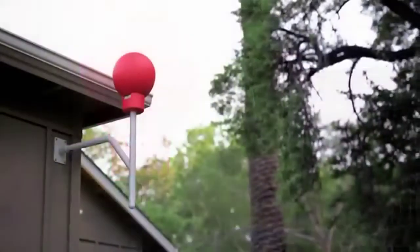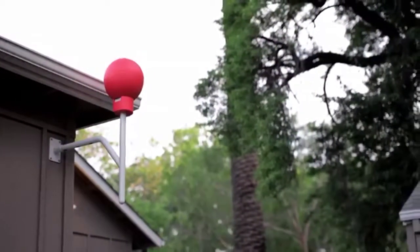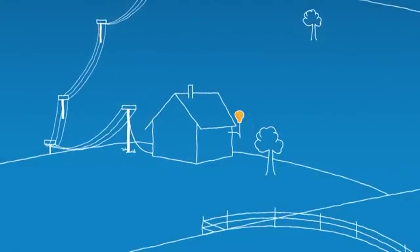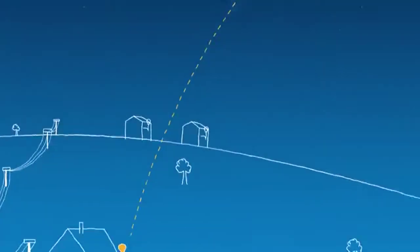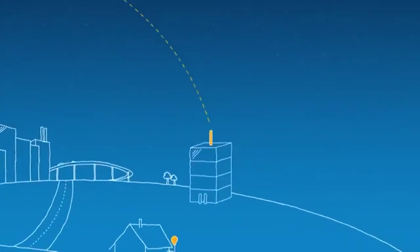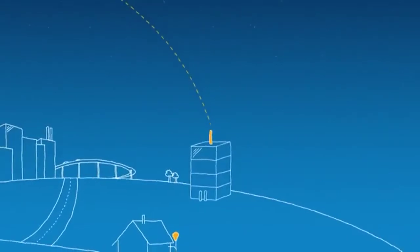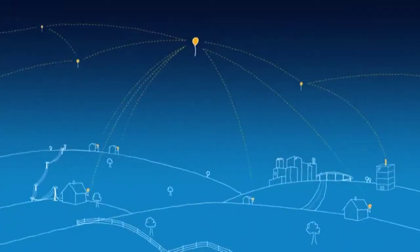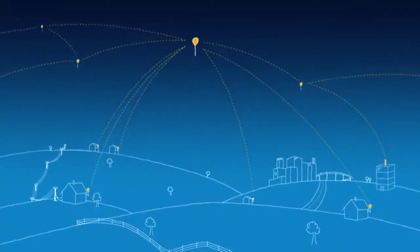The balloons communicate with specialized internet antennas on the ground. So this antenna here points up at the sky and talks to this balloon. And each one of these balloons talks to their neighboring balloons and then back down to the ground station, which is connected to the local internet provider. What this does is it creates a network in the sky.